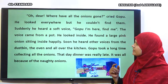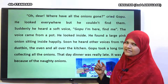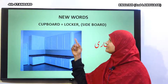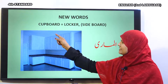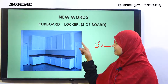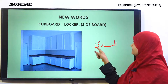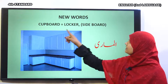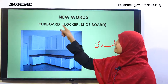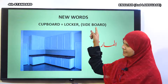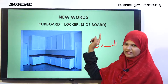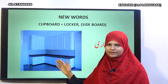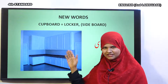Now let us move to the new words of the lesson. First one is cupboard. Here is a picture of a cupboard. Cupboard means almari. In English, we call it locker, sideboard or else cupboard. Urdu mein hum isse almari kehenge.